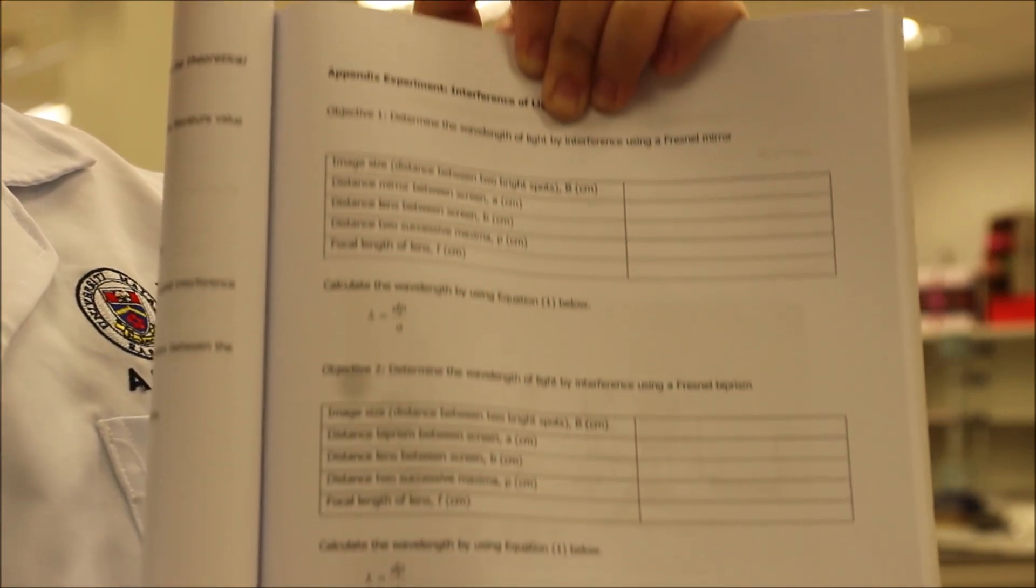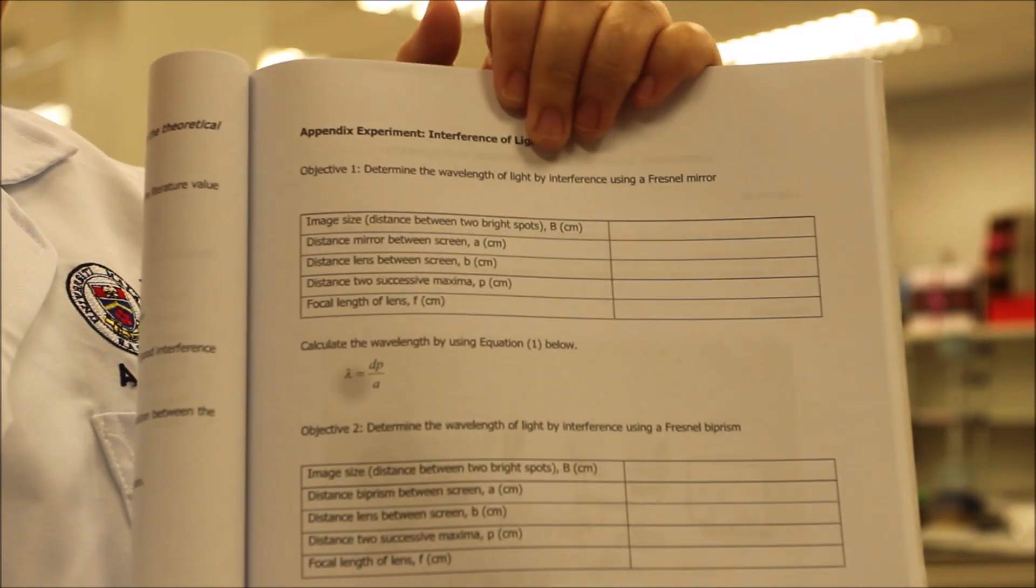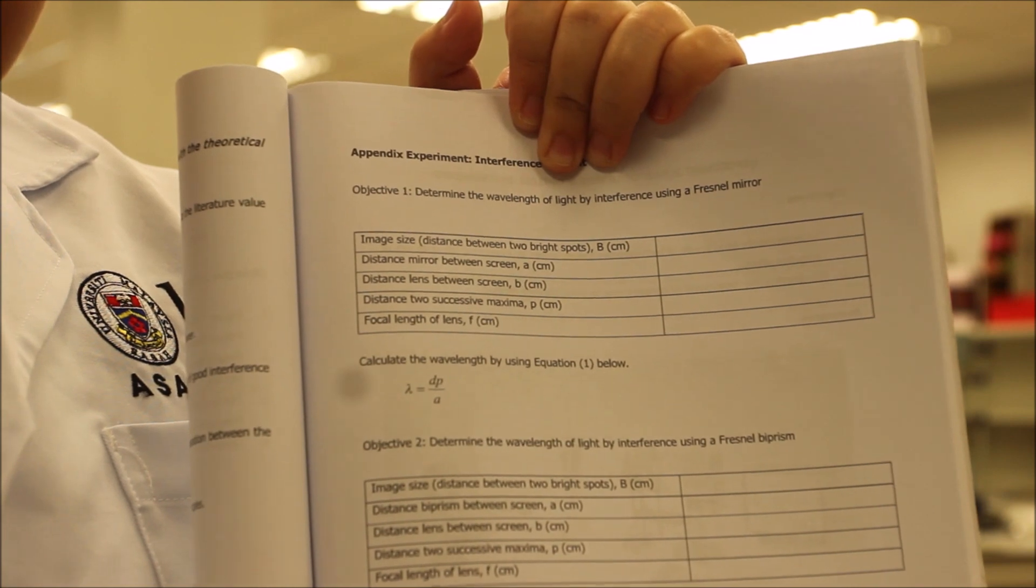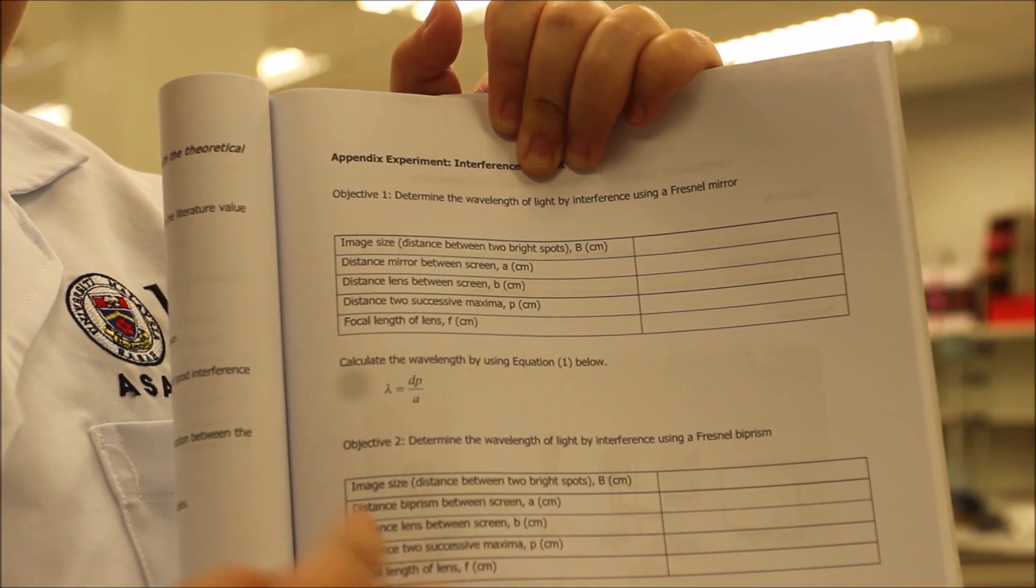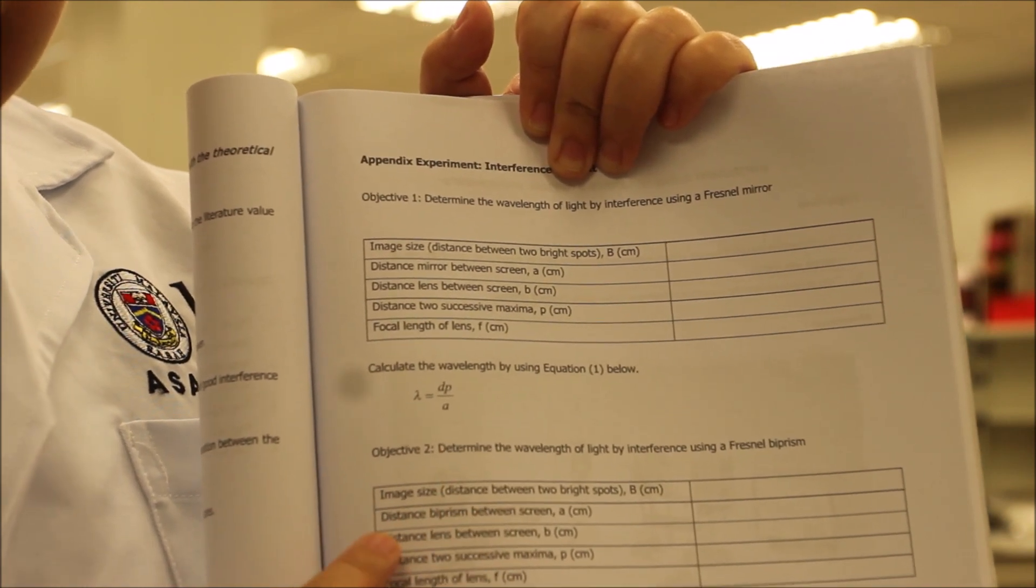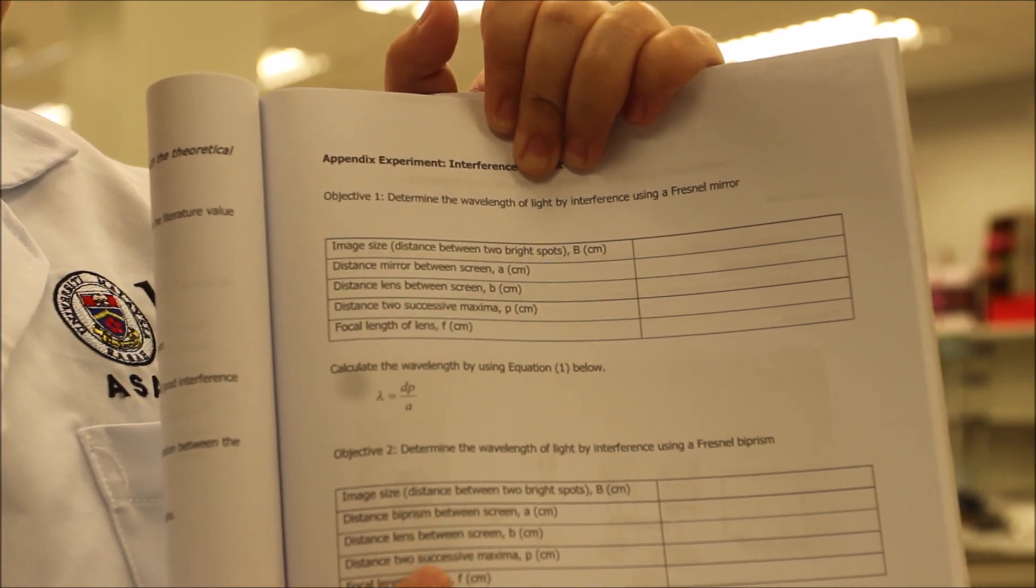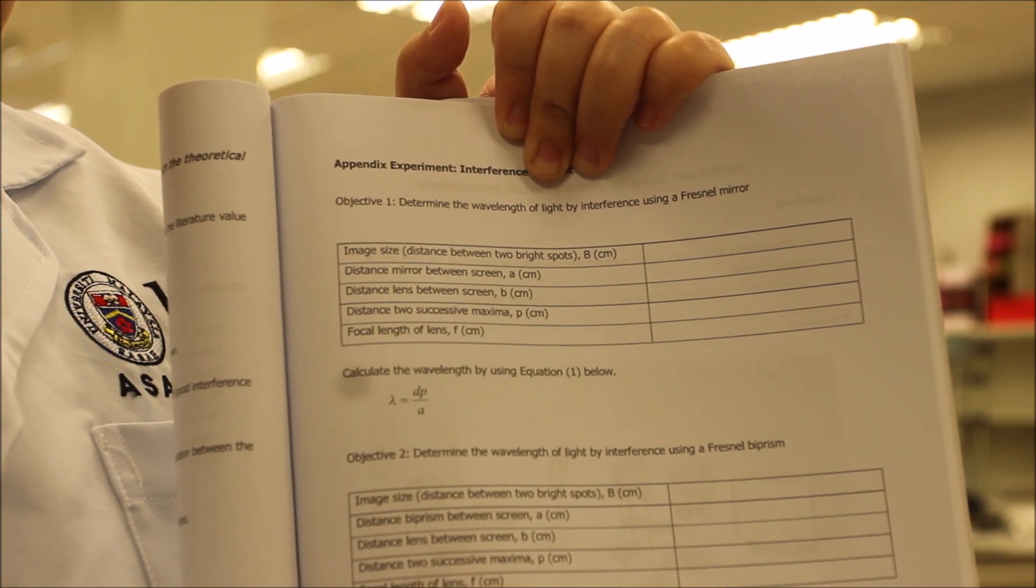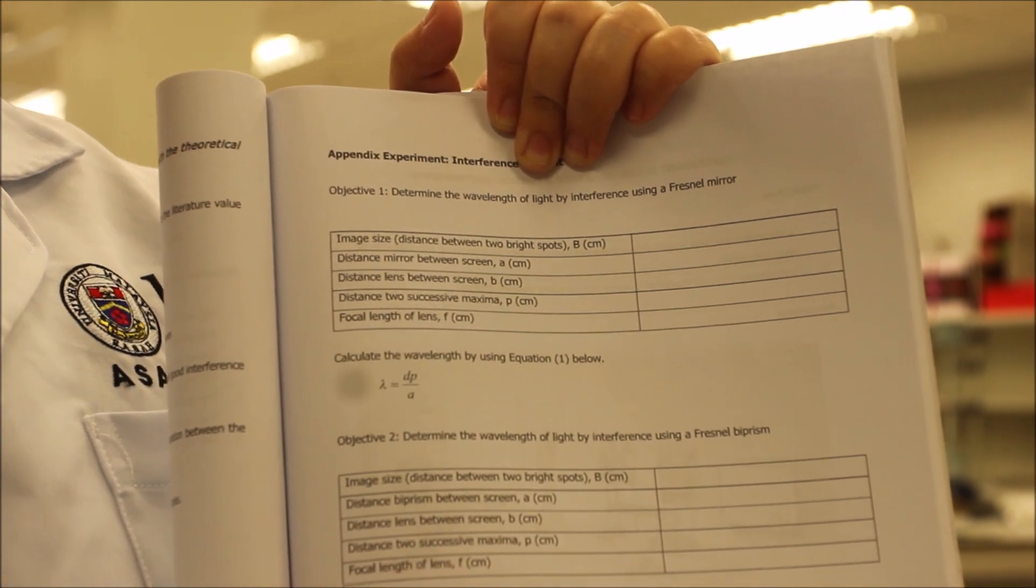We proceed with appendix of objective 2. For objective 2, it's almost the same. We need to tabulate the data of image size, distance by prism between screen, distance lens between screen, distance to successive maxima and focal length of lens.